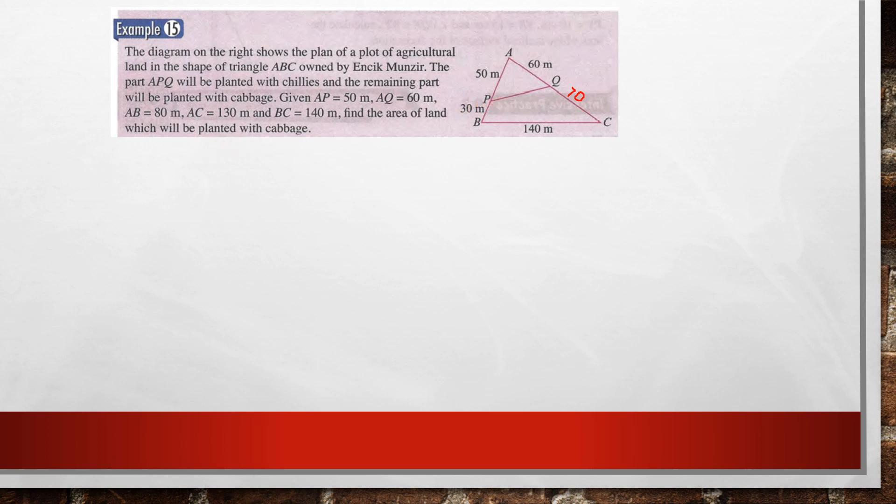So that means cabbage will be this part. Because APQ will be planted with chilies. So this part, BPQC, will be planted with cabbage.